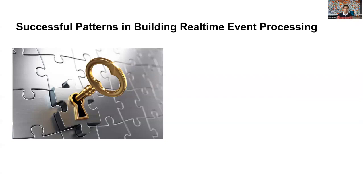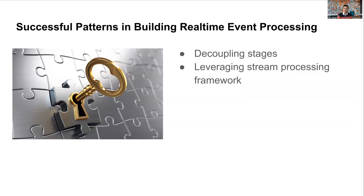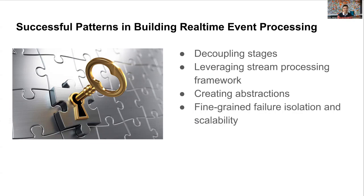In my mind, there are four principles that have passed the test of time. First, decoupling stages — we'll talk about what those stages are and why and how to make that decoupling happen. Second, leveraging stream processing frameworks — we'll cover what a stream processing framework can do for you and how to pick one. Third, creating abstractions — I will list common abstractions to facilitate adoption of your system. And finally, fine-grained failure isolation and scalability. I'll use the real-time event processing system we created at DoorDash as a concrete example.